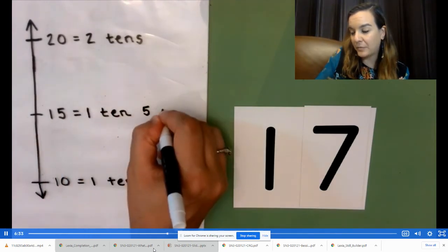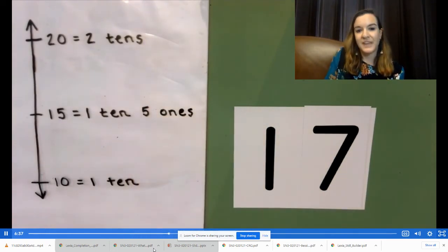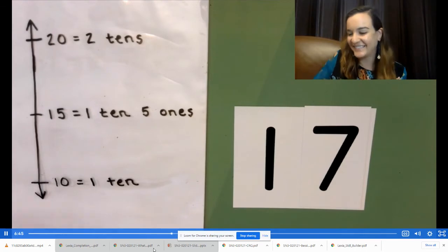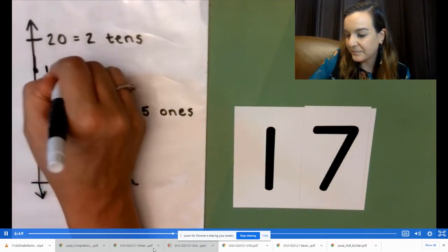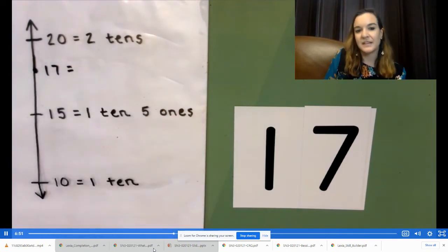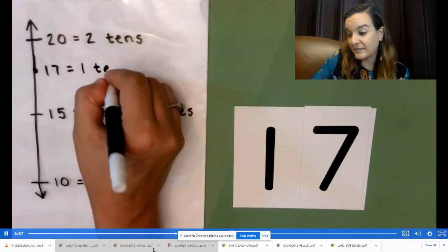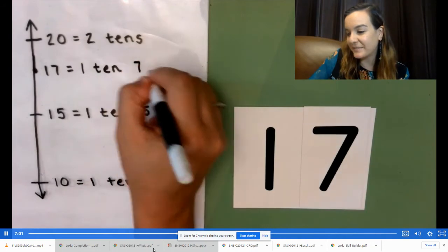Now let's plot 17 on our vertical number line. We said earlier that 17 has one ten, seven ones.